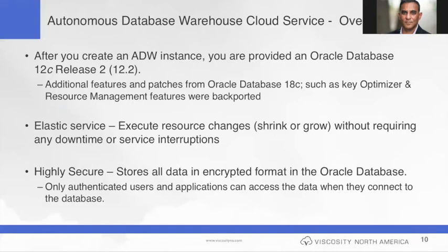After you've created your ADW instance, what do you get? You get a 12.2 release database — this is not your standard off-the-shelf kernel 12.2 instance. This 12.2 instance has additional features, functionality, and patches that are part of 18c that were backported to 12.2, and that's why I call it 12.2++ — because key optimizer and resource management features were all backported. So it's not your standard 12.2 instance; this is 12.2++.